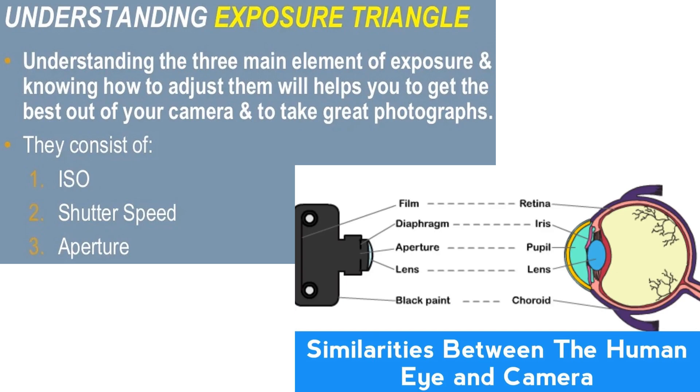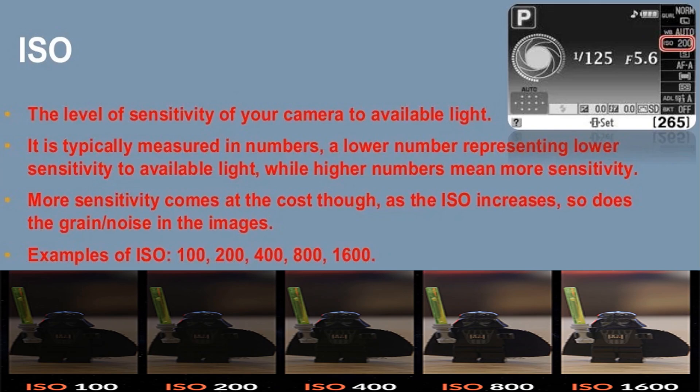ISO is the level of sensitivity of your camera to available light. It is typically measured in numbers, with a lower number representing lower sensitivity to available light, while higher numbers mean more sensitivity. More sensitivity comes at a cost though — as the ISO increases, so does the grain or noise in the images. Examples of ISO values: 100, 200, 400, 800, 1600.